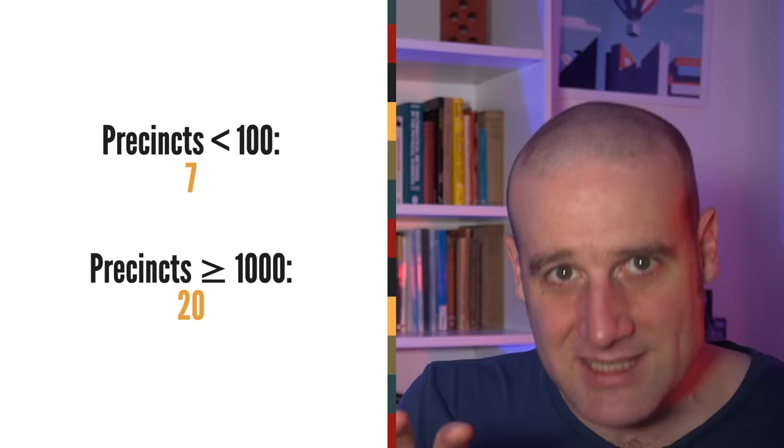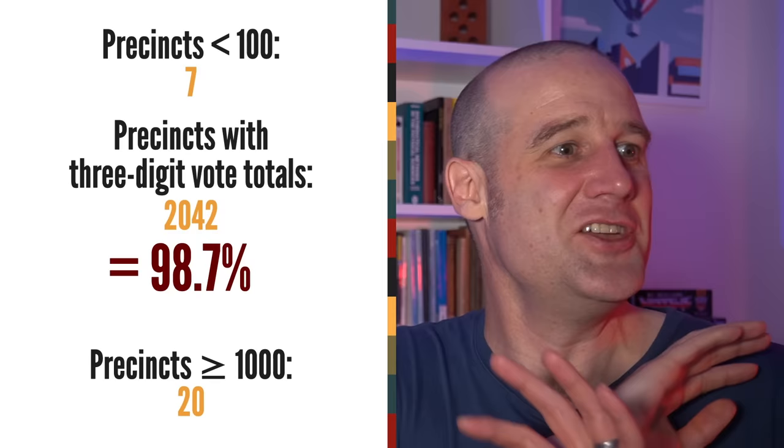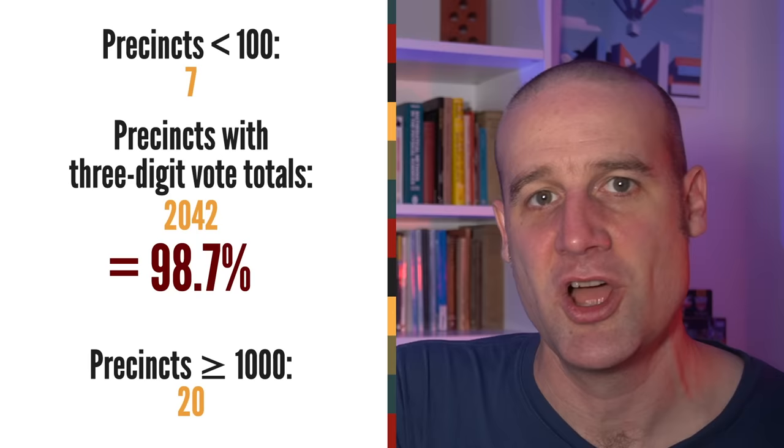Which means 98.7% of all precinct vote totals was a three digit number. This has got like the opposite of several orders of magnitude. Almost every precinct reported pretty much the same number of votes. And they were all smack bang in the middle of the range of three digit numbers. Of course we're not going to get a Benford distribution out of this.